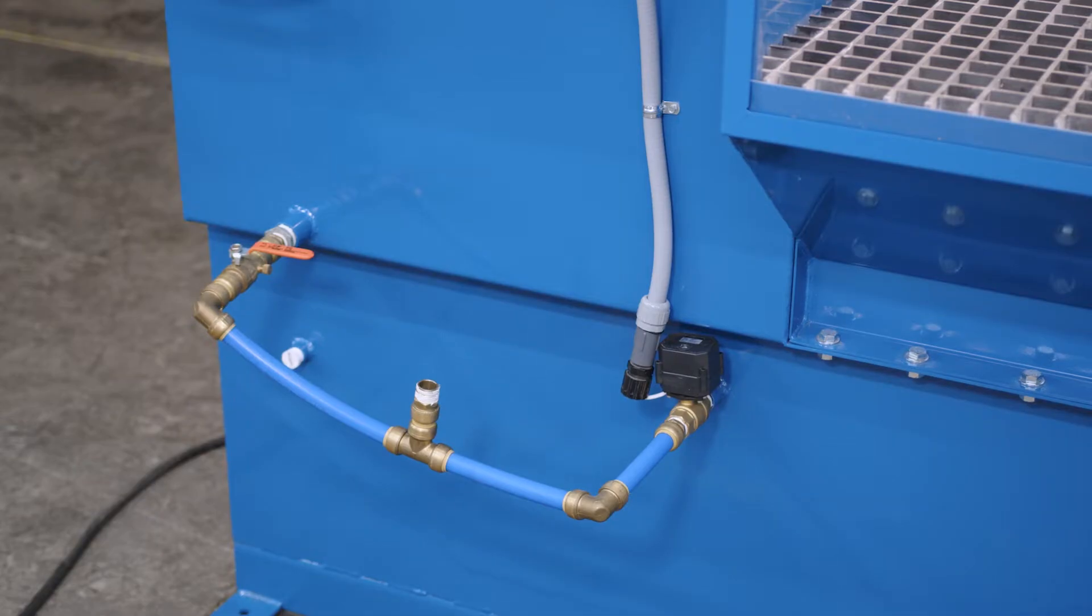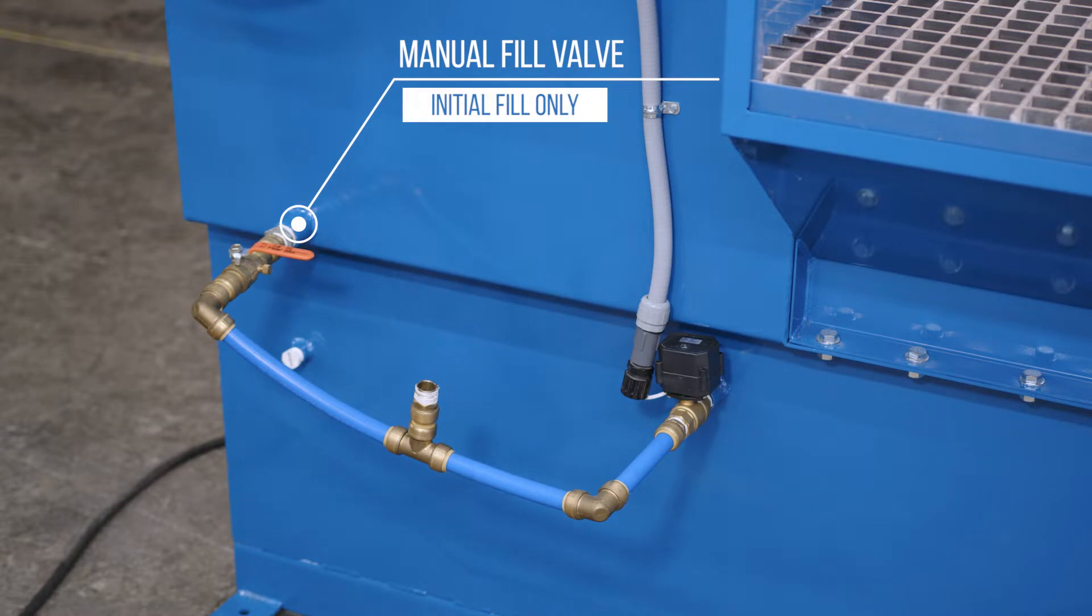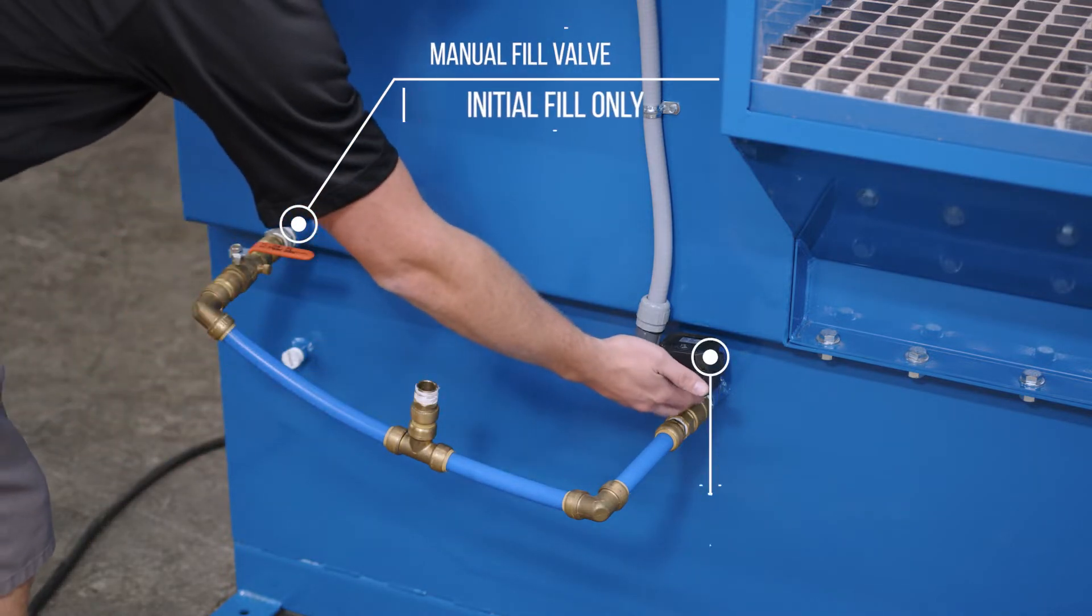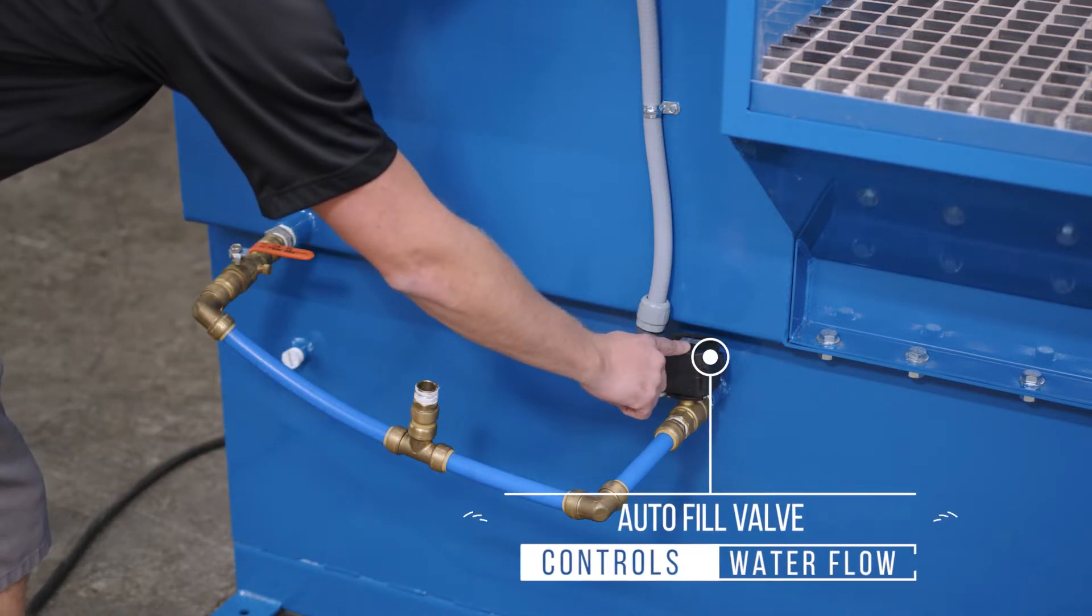You will see two water connections to the unit that have been pre-plumbed from the factory. The left side, or manual fill valve, is for initial fill only, and the right side, or auto fill valve, controls the water flow during operation of the unit.